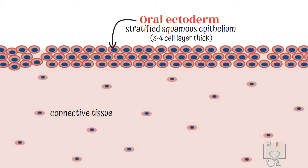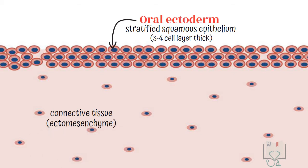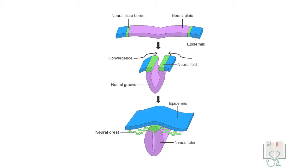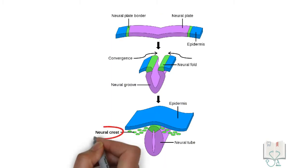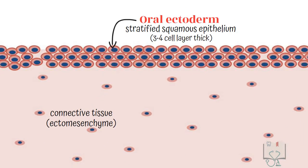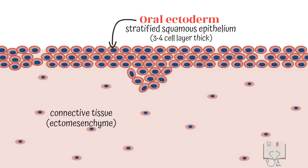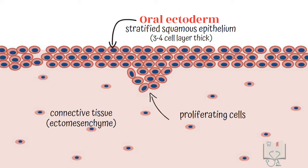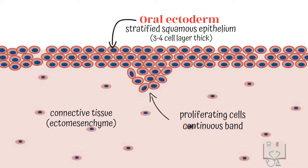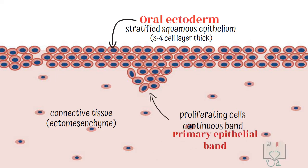The connective tissue is many times referred to as ectomesenchyme, just to emphasize its origin from the neural crest cells, which are ectodermal initially and later become mesodermal. At about six weeks of embryonic life, the basal cells of the oral ectoderm in some areas start proliferating into the underlying connective tissue, and they form a continuous band of thickened epithelium called the primary epithelial band.